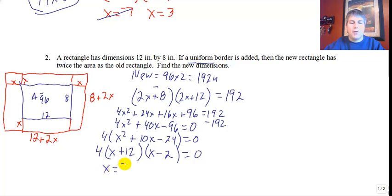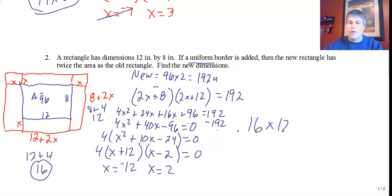So using my zero product property, x equals negative 12 and x equals positive 2. Well, x is the length of my border. My border has a length of x of 2. So my new dimensions are 12 plus 4, or 16, and 8 plus 2 times 2 is 4 is 12. So my new dimensions are 16 by 12.